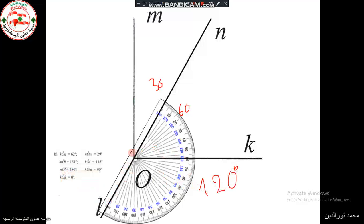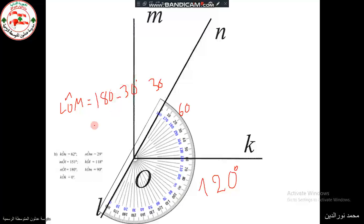We can compute the remaining angle LOM using the straight angle. Since LON is a straight angle (180°), angle LOM equals 180 minus 30 degrees, which is 150 degrees.